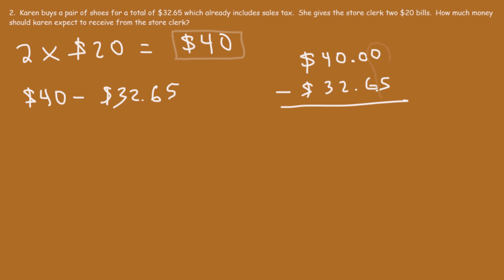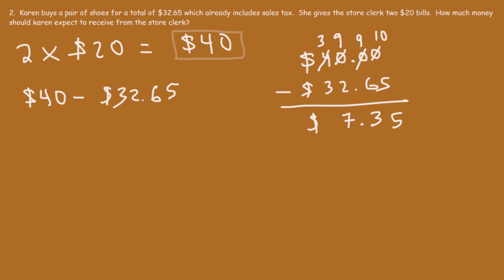We need to subtract the top number by the bottom number. 0 minus 5 is negative, so we can't do that — we need to borrow. We borrow a 1, that 0 becomes a 10, and the adjacent digit becomes a 9. Since there's nothing to borrow from the 0, we borrow a 1 from the 4, which becomes a 3. So: 10 minus 5 is 5, 9 minus 6 is 3, 9 minus 2 is 7, 3 minus 3 is 0. The answer is $7.35.